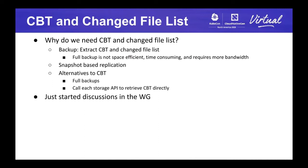The next one is CBT — Changed Block Tracking — and the changed file list. Without CBT and the changed file list, backup vendors have to do full backups all the time. This is not space efficient, takes longer to complete, and needs more bandwidth. Another use case is snapshot-based replication, where you take snapshots periodically and replicate to another site for disaster recovery. Without CBT, we can either do full backups or call each storage API individually to retrieve CBT, which is highly inefficient. We just started a discussion about this in the working group.